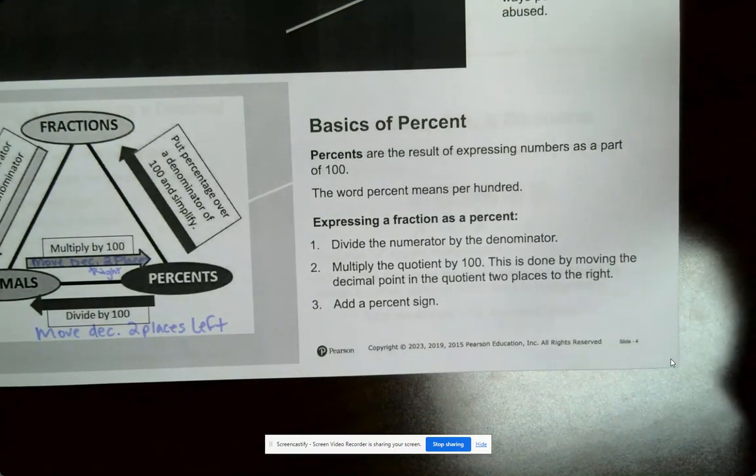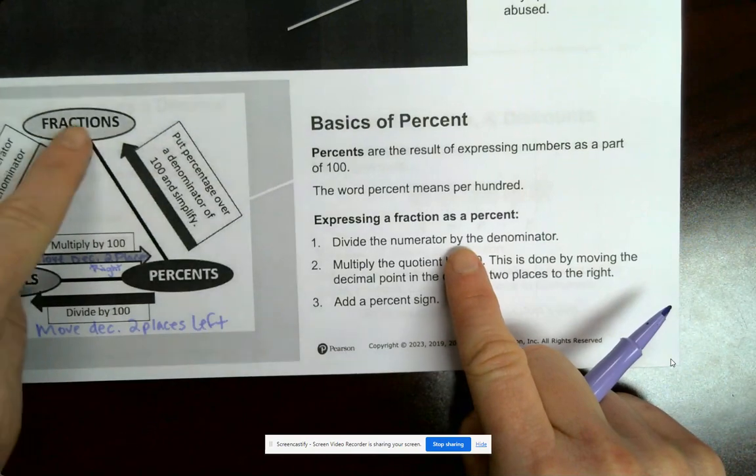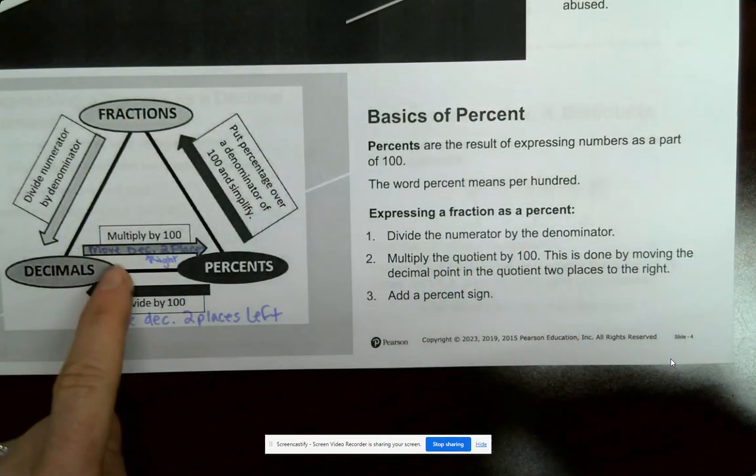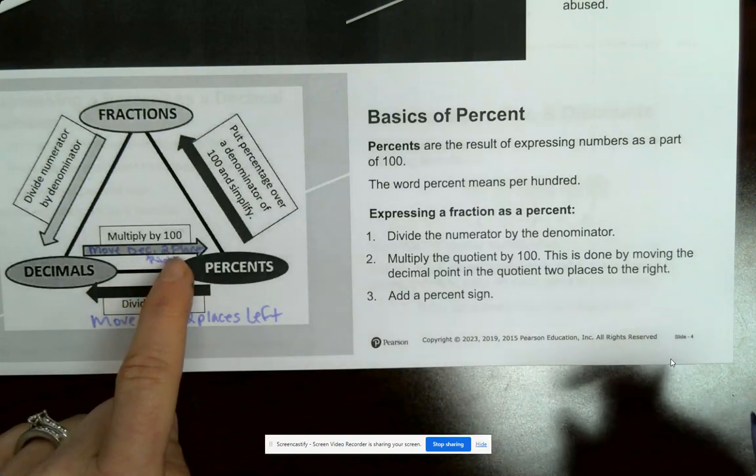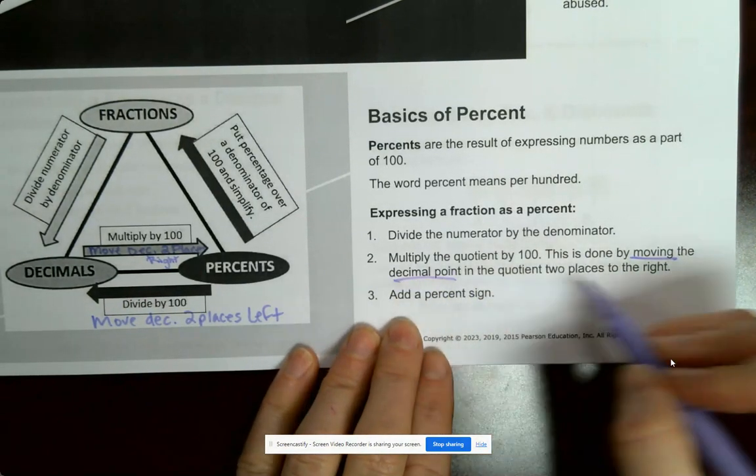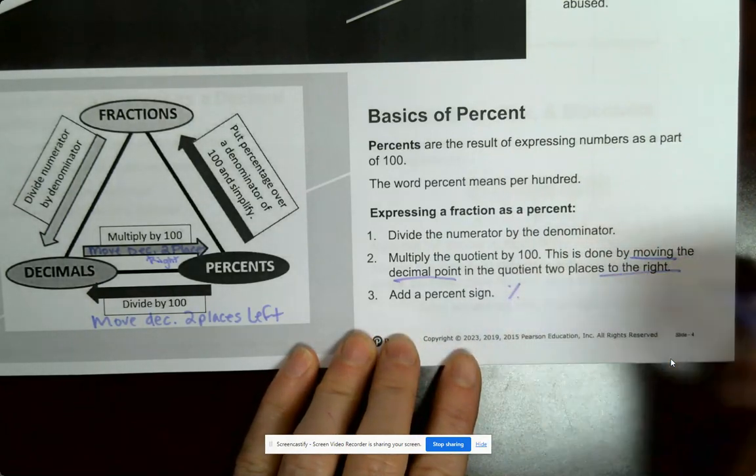So to express a fraction as percent, you're going to divide, just like this says divide, and then you can even multiply by 100 or just move your decimal over two places to the right. Moving decimal two places to the right and then add your percent.